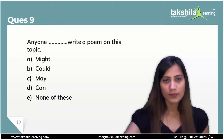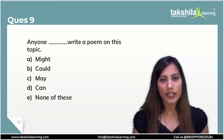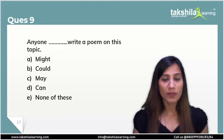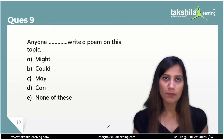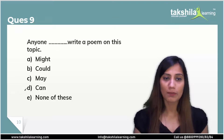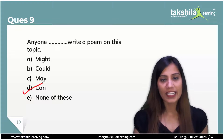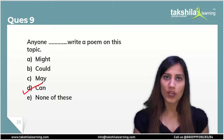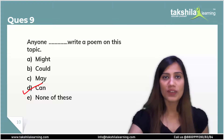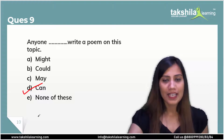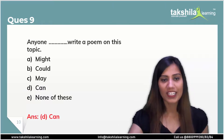Question 9: 'Anyone dash write a poem on this topic.' Anyone can write a poem on this topic — it is a very simple sentence showing ability. The ability shows that anyone can write a poem on this topic. So for question 9, the correct answer is option D: can.